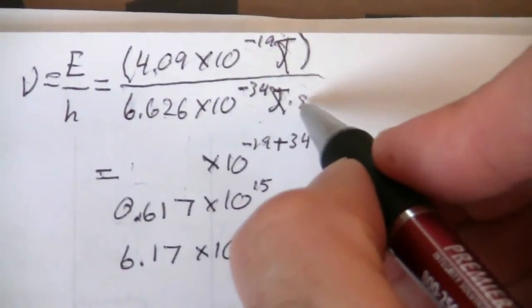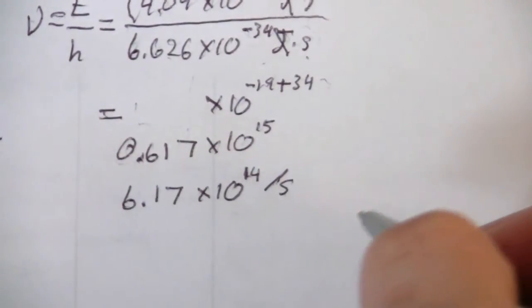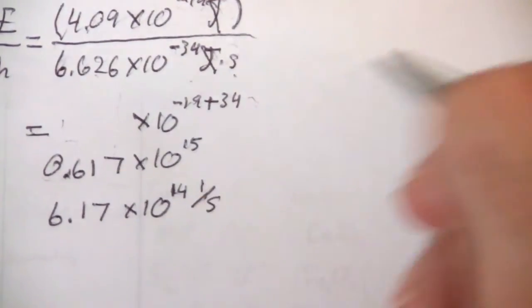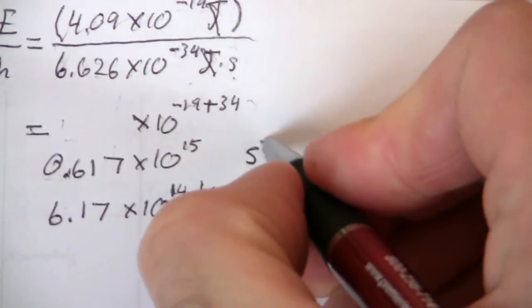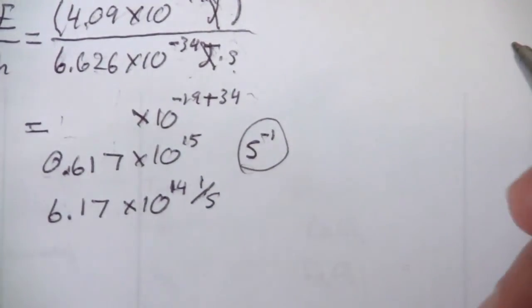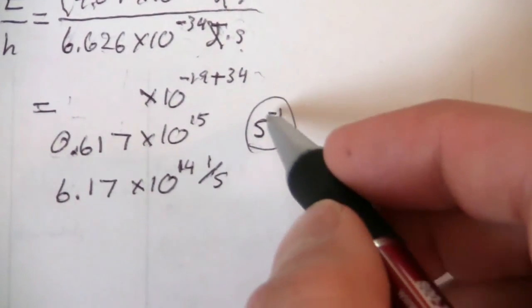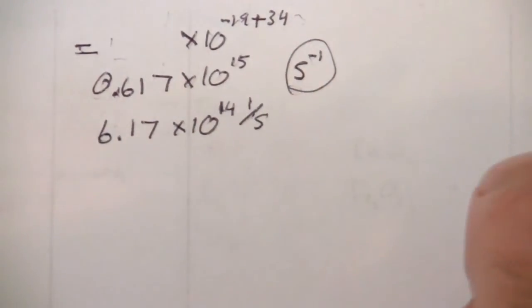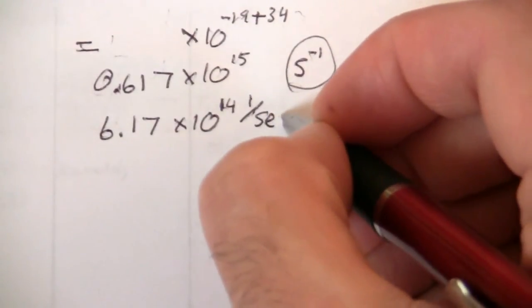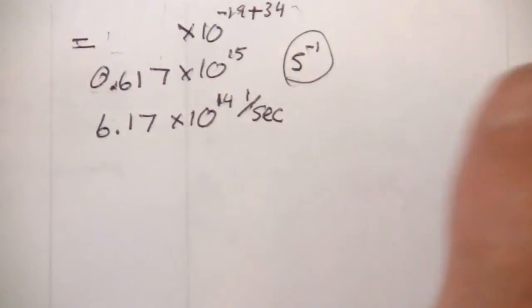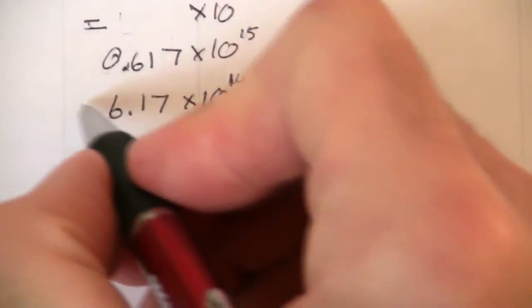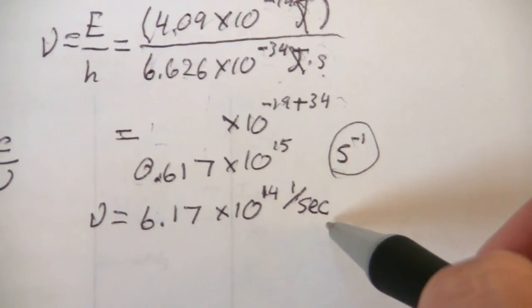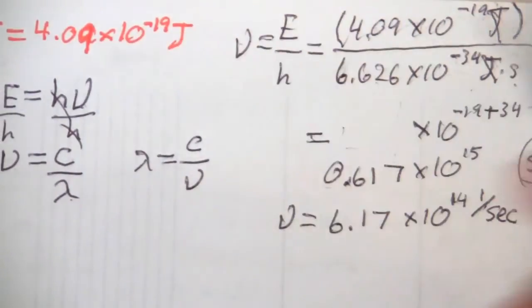And my units, as I mentioned before, are per seconds. You may see that written as either slash seconds or maybe one over seconds, or sometimes you might see it as s to the minus 1. All of those are equivalent. This minus 1 just means that it's on the bottom. So typically the way I write it is just slash s, and I should probably, when I'm writing, do sec so that there's no confusion with that being a 5 there. So this is my frequency. That's what I calculated here. That's the frequency of my light that has this energy.